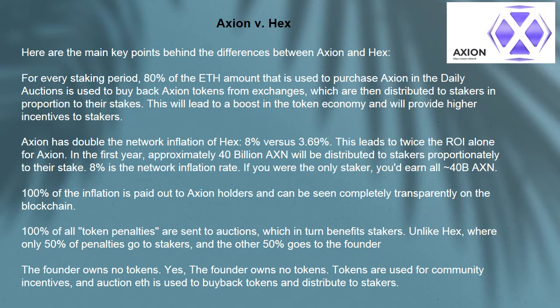100% of all token penalties are sent to auctions, which in turn benefits stakers. Unlike HEX, where only 50% of penalties go to stakers and the other 50% goes to the founder. The founder owns no tokens — tokens are used for community incentives, and auction fees are used to buy back tokens and distribute to stakers.